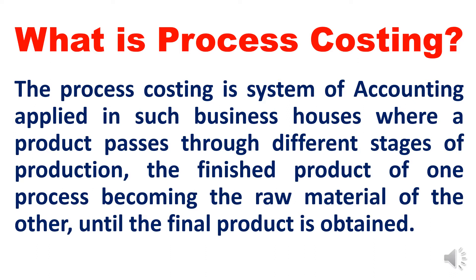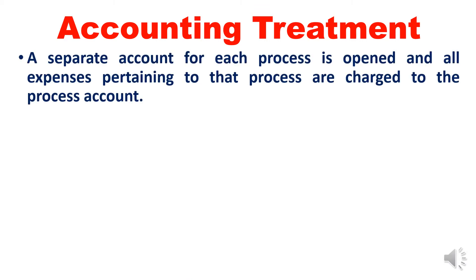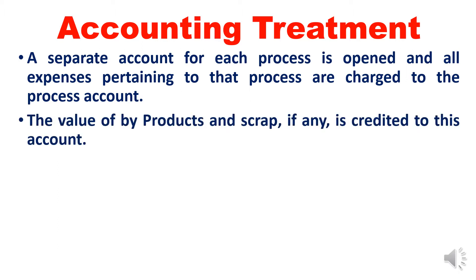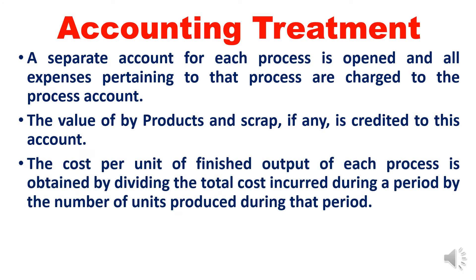Process costing is a very significant concept in cost accounting. When it comes to the accounting treatment, a separate account for each process is opened and all expenses pertaining to that process are charged to that relevant process account only. The value of by-product or scrap, if any, is credited to the process account. Normal loss is the expected loss, and when we sell that scrap or by-product, that income will be credited to the process account.